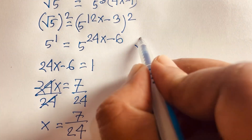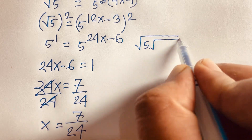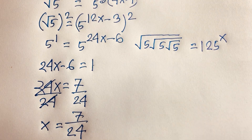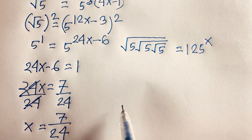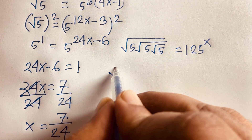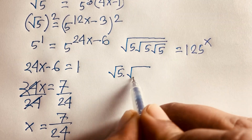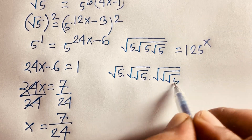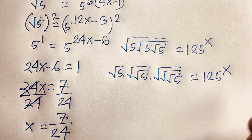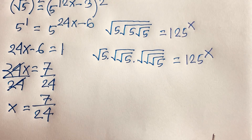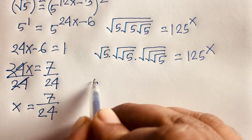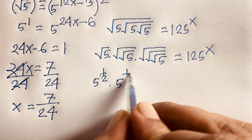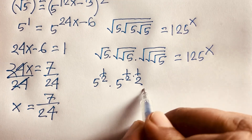Let's check our answer. Our question is square root of square root of square root of 5 equals 125 to the power x. This can be written as square root of 5 times square root of square root of 5 times square root of square root of square root of 5. Basically square root of 5 is 5 to the power one-half, then times half, times half.